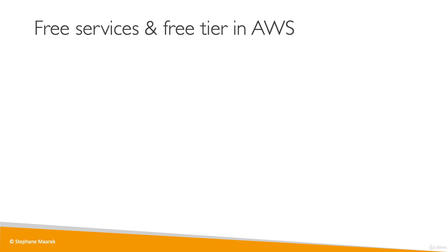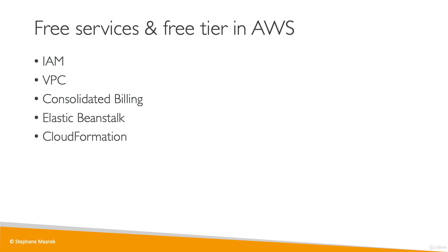In AWS, some services are free and others are part of the free tier. IAM is free, VPC is free, and Consolidated Billing is free as well. Elastic Beanstalk, CloudFormation, and ASG are also free services.